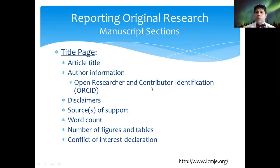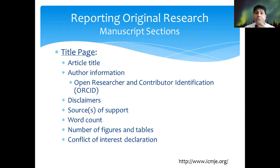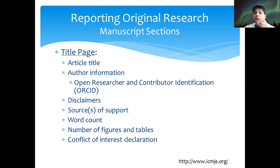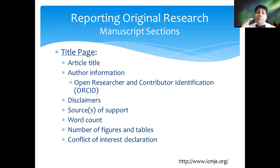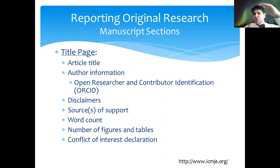The title page is your first page of the manuscript. Write the title of your article, author information — each author listed with their first and last name and medical or other degree. Most journals now ask for an ORCID ID, which is the Open Researcher and Contributor Identification. Include disclaimers about conflicts of interest or acknowledgments, word count from the main body (background through before references), number of figures and tables, and conflict of interest declaration. The title page should fit within one page, and the abstract should start on a fresh page.